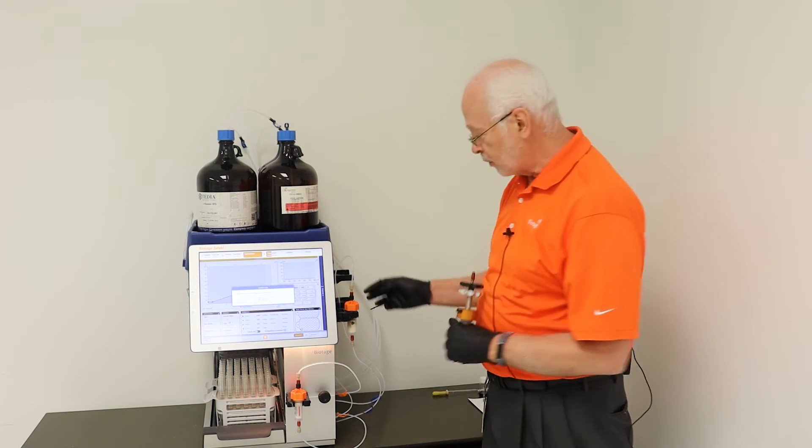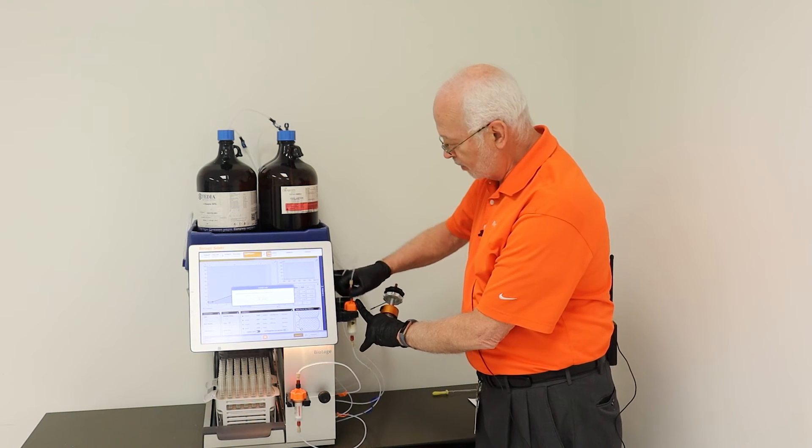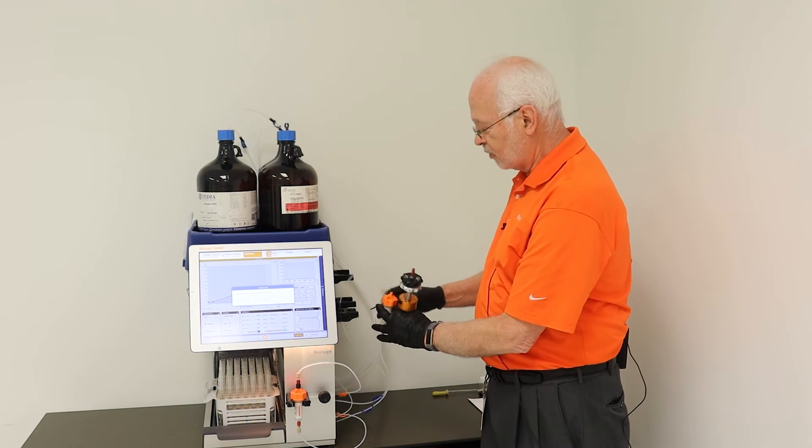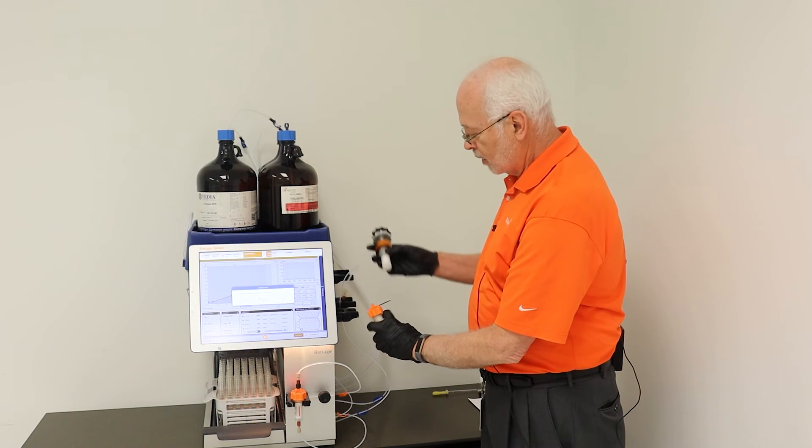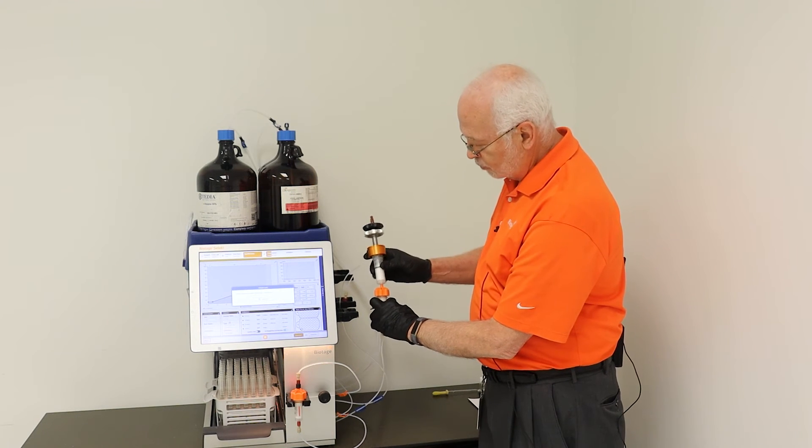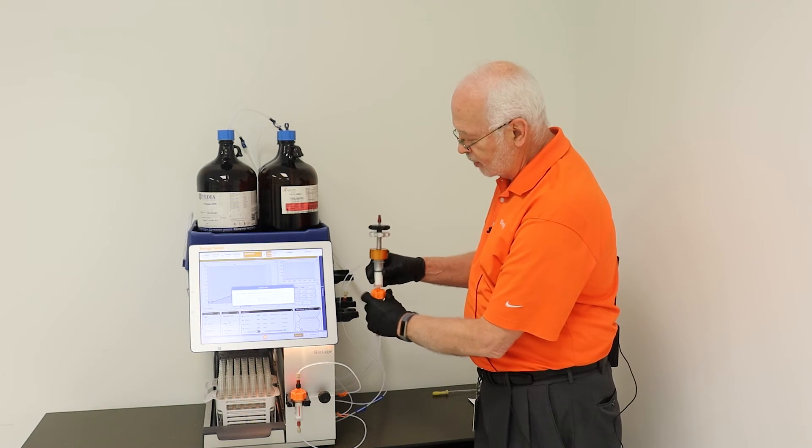So the best way to do that would be to disconnect the inlet tubing from your primary purification column. Then attach your dry load vessel to the top of that column.